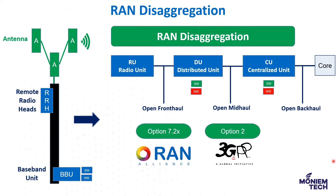Standardization bodies, especially 3GPP, clearly defined and recommended the functionality split between CU and DU. However, the distribution of functions between the radio unit and the DU was left for industry to determine. In this case, O-RAN defined Option 7.2x, which we will discuss in more detail in upcoming episodes.